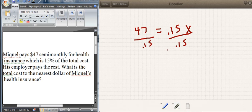That'll give me the total cost. So X is equal to $47 divided by 0.15, and I get $313.33 per semi-monthly period.